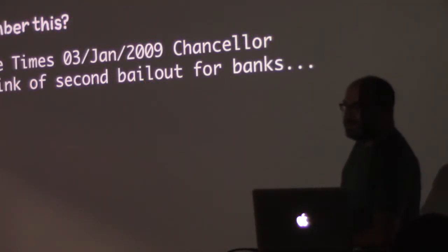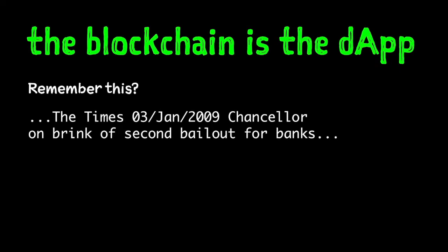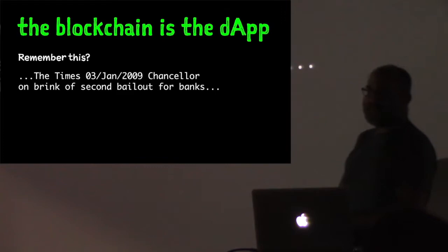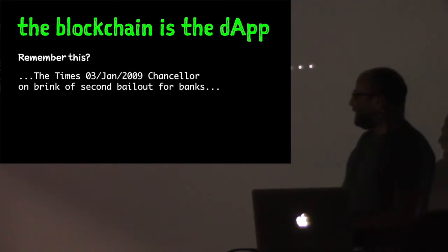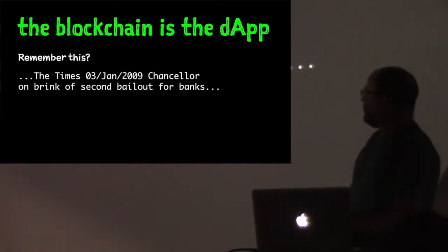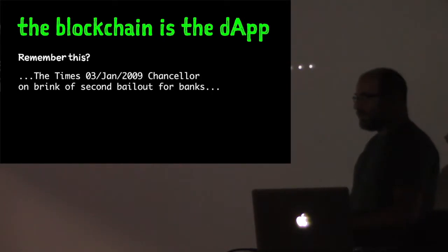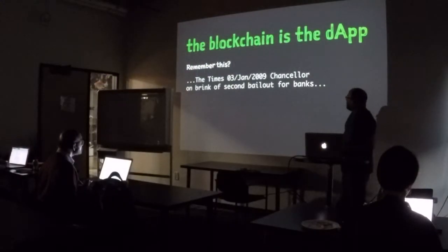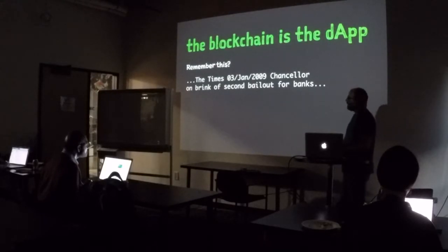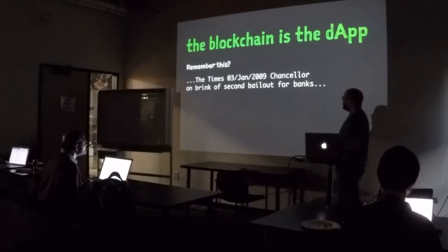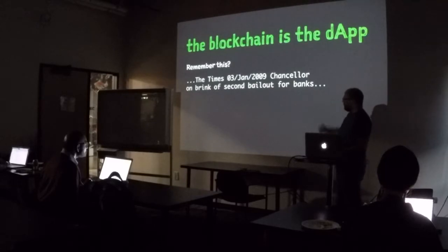So do you guys recognize this? This is a bit of text embedded in the Genesis block of the Bitcoin blockchain. And even though this is Ethereum, not Bitcoin, I consider this the most important expressive act of the blockchain movement. Why is there a bit of random newspaper text embedded in the Genesis block? My interpretation is it's a statement of independence — a way of saying that the institutional and financial world in which we were caught up is dysfunctional and corrupt, and we want a way out of it.